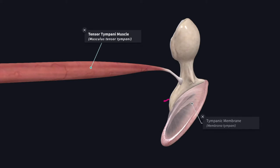The handle is directed downward, backward and medially, and it is embedded in the fibrous layer of the tympanic membrane. The medial surface of the upper end of the handle receives the insertion of the tendon of tensor tympani muscle.